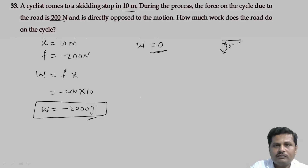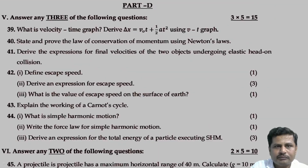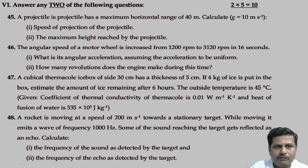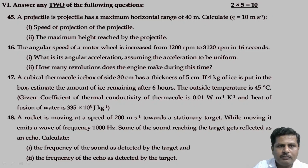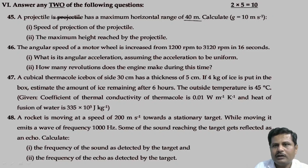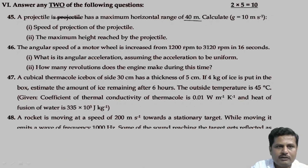Let us see the next problem. This is a 5-mark numerical, question 45. A projectile has a maximum horizontal range of 40 meters. We need to calculate the speed of projection of the projectile and the maximum height reached by the projectile.